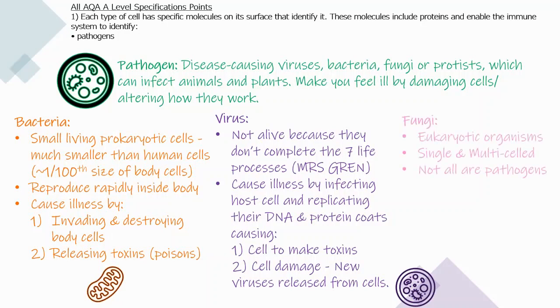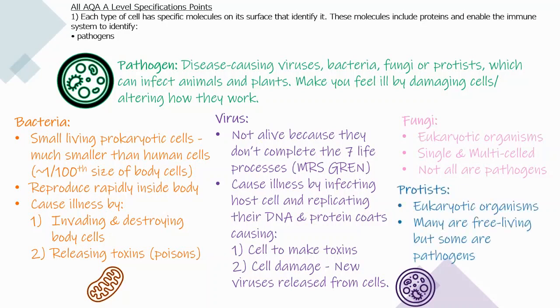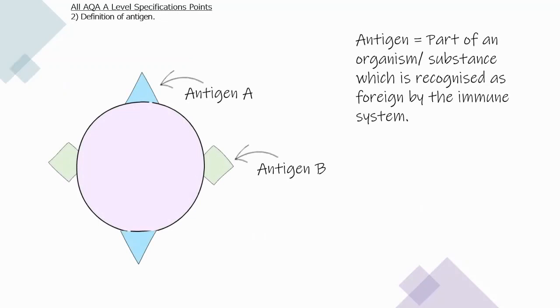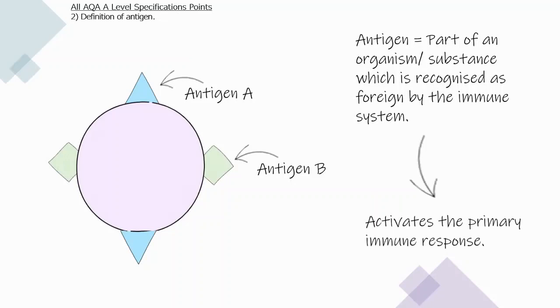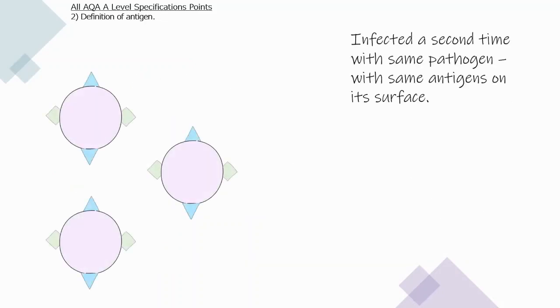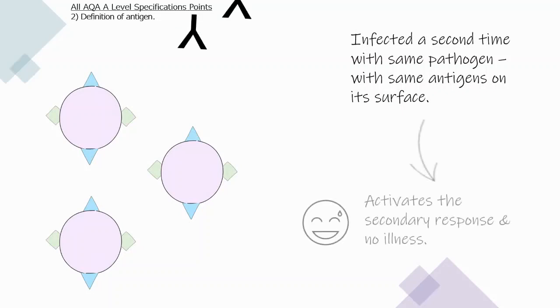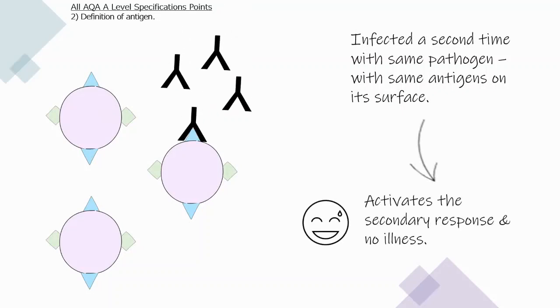Fungi are eukaryotic — they can be single or multi-celled and not all fungi are pathogens. Protists are also eukaryotic; many are free-living but some are pathogens. An antigen is part of an organism or a substance which is recognised as foreign by the immune system and activates the primary immune response. When infected a second time with the same pathogen carrying the same antigens, this activates the secondary response, usually resulting in no symptoms and no illness.